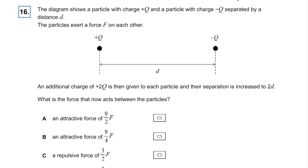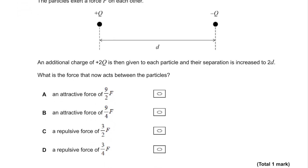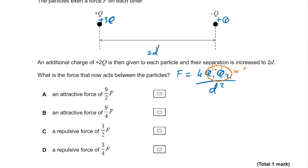Question sixteen: two charged particles with total distance. The charges go from Q and Q to 3Q and Q, and the distance increases to 2D. F equals KQ₁Q₂ over D². The top changes from 1×1 to 3×1, multiplying by three. The bottom multiplies by two, giving a factor of four. So overall it's times three-quarters. The answer is D.